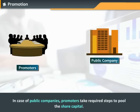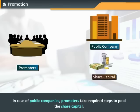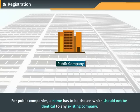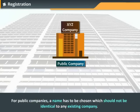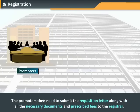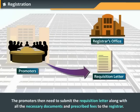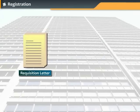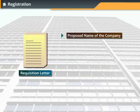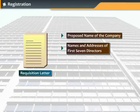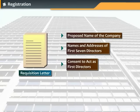In case of public companies, promoters take required steps to pool the share capital. For public companies, a name has to be chosen which should not be identical to any existing company. The promoters then need to submit the requisition letter, along with all the necessary documents and prescribed fee, to the registrar. The requisition letter must contain the proposed name of the company, names of first seven directors, their addresses, and their consent to act as first directors, along with two witnesses.